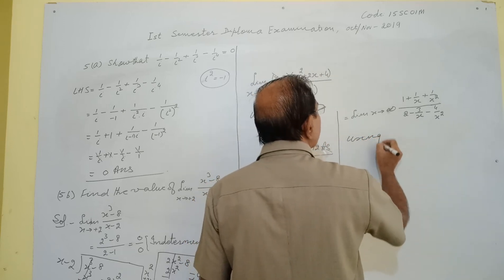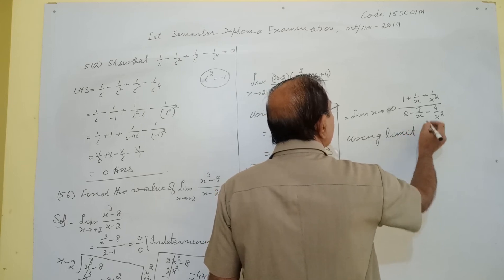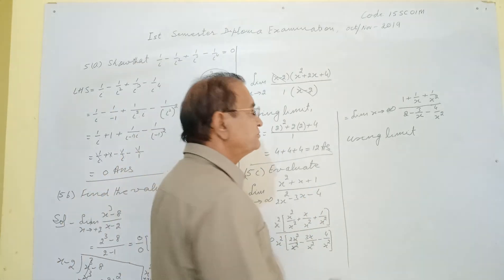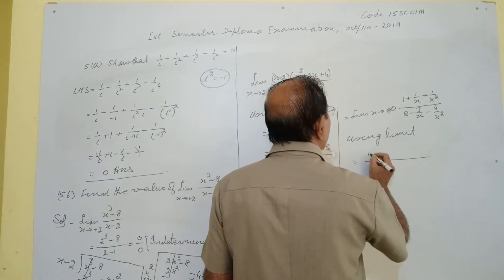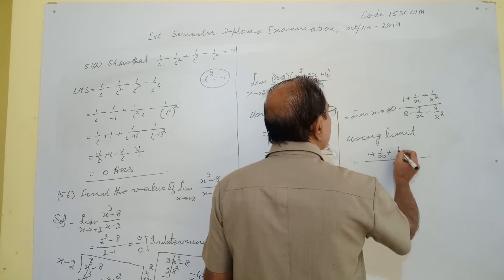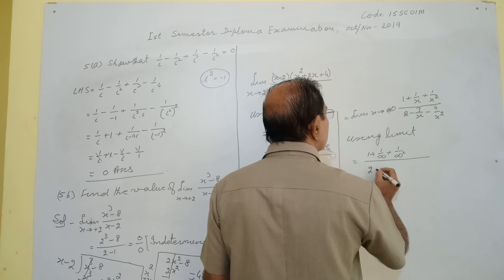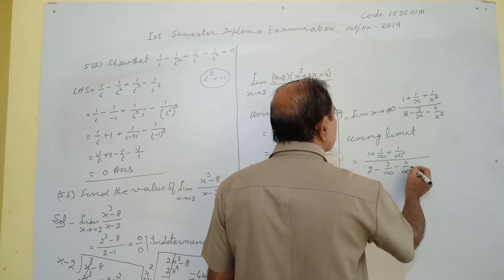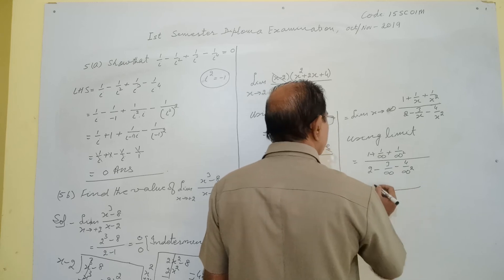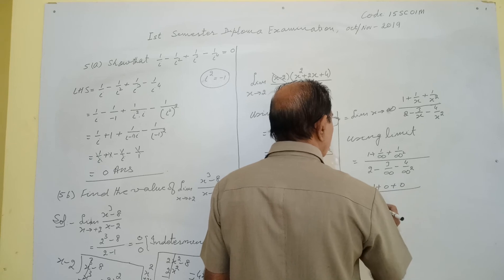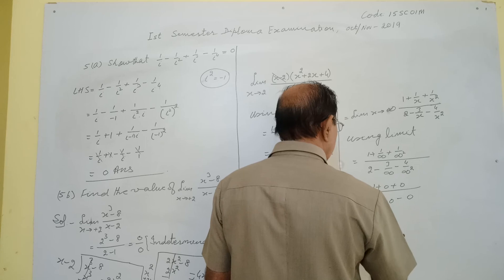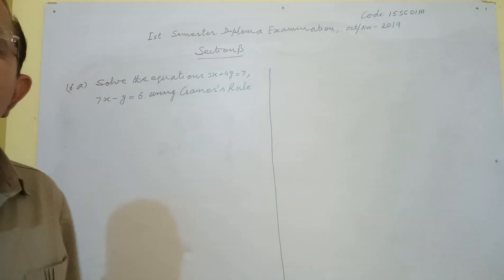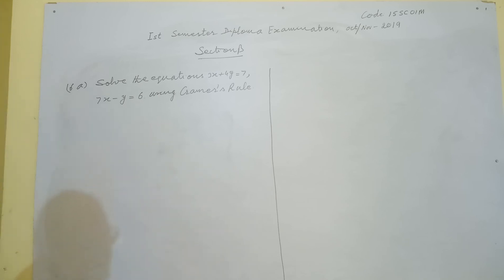Now replace x by infinity: 1 + 1/∞ + 1/∞² in the numerator equals 1 + 0 + 0 = 1. Denominator: 2 - 3/∞ - 4/∞ = 2 - 0 - 0 = 2. So the answer is 1/2.